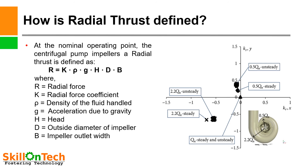How is radial thrust defined? You can see a picture of a volute casing in this slide. As we know, in a volute casing the area of the discharge path is not uniform. Hence, due to pressure variation in the discharge path, a radial thrust is produced.